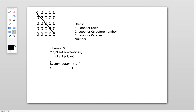In the inner j-loop, for (int j = 1; j < i), suppose i is 1 in the first iteration. Then j < 1 means 1 < 1, which is false. So zero will not be printed in the first iteration — in the first row I don't need zeros before the number. Since the condition is false, we come out of this loop.